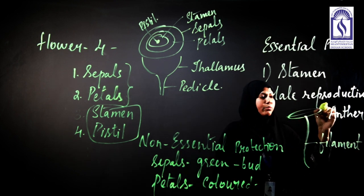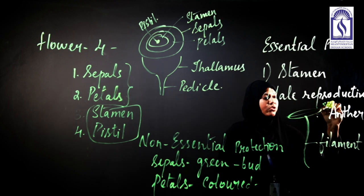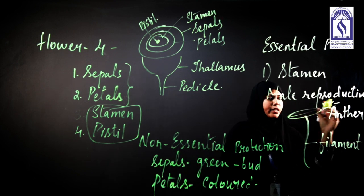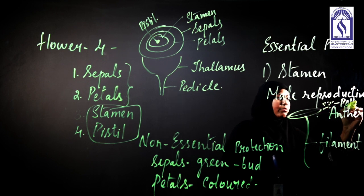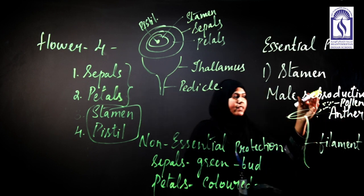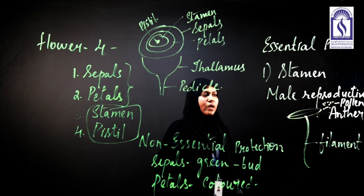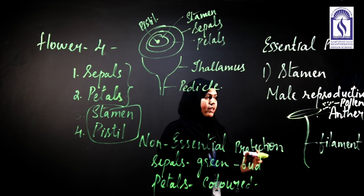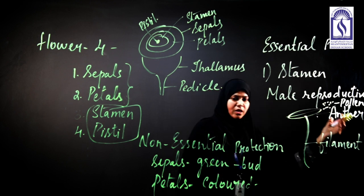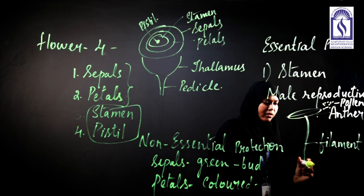When the anther matures, it produces a large amount of powdery substance known as pollen. Inside the pollen are found the male gametes, which take part in the process of reproduction.